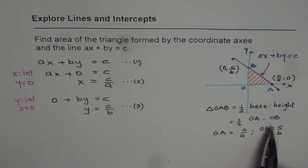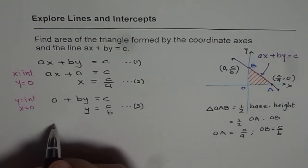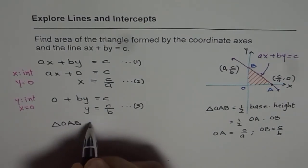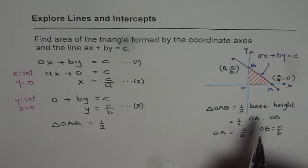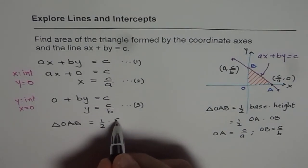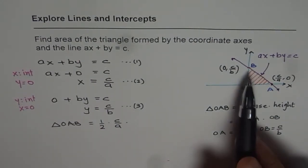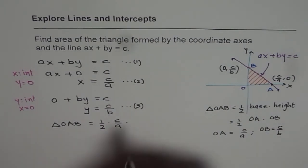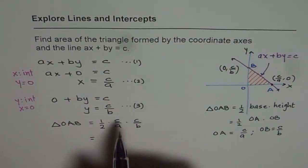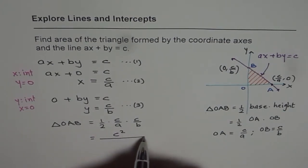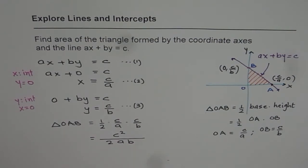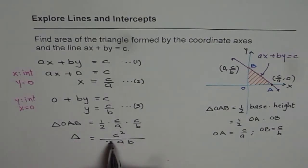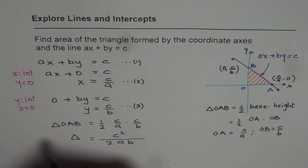Now it is easy to find the area of the triangle. Area of triangle OAB equals half times OA times OB, which is half times c over a times c over b. Multiplying these: c times c is c squared, and in the denominator we get 2 times ab. So the area equals c squared divided by 2ab. That is a very useful formula — the area of the triangle is c squared over 2ab when the equation of the line is given as ax plus by equals to c.